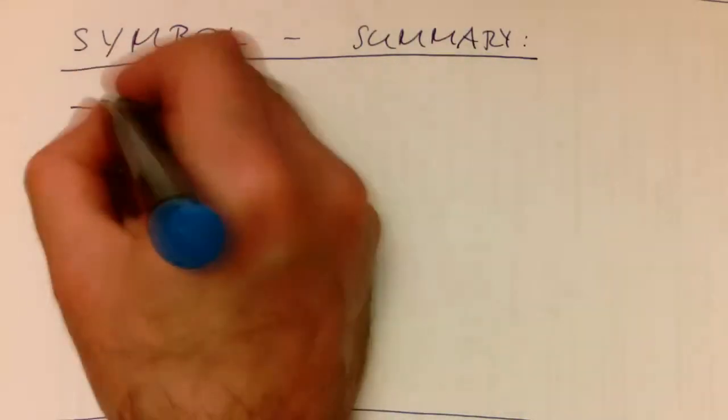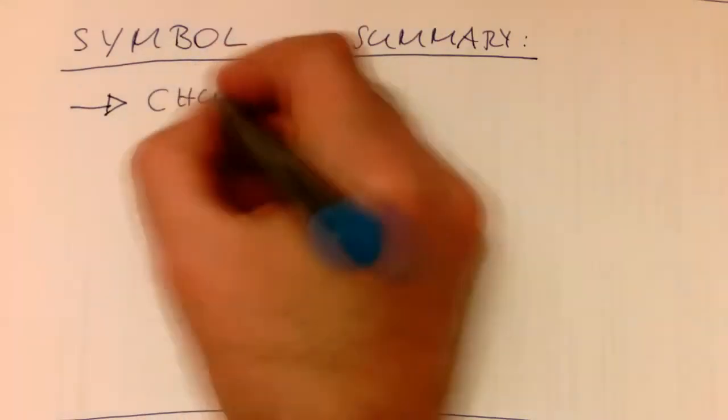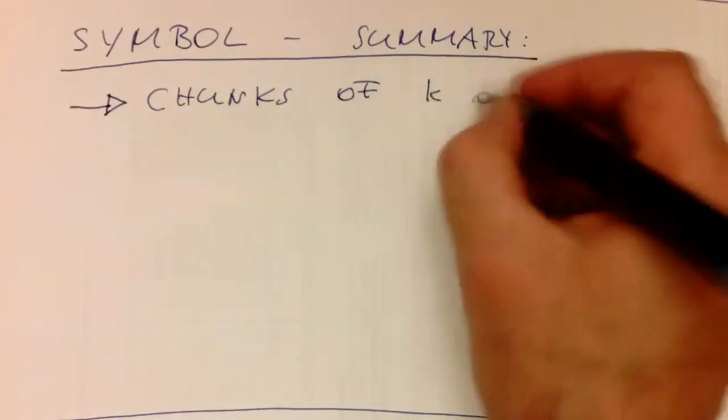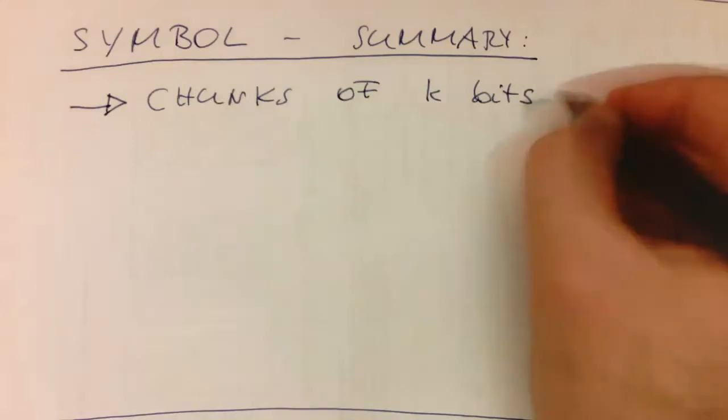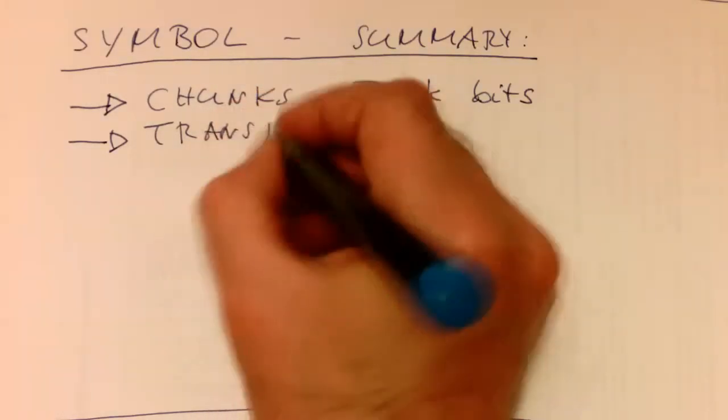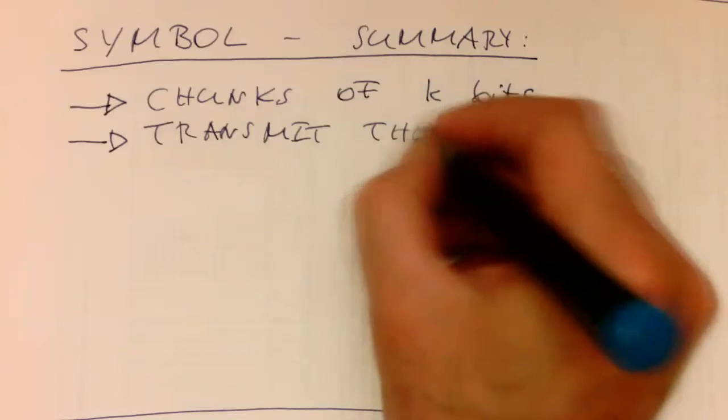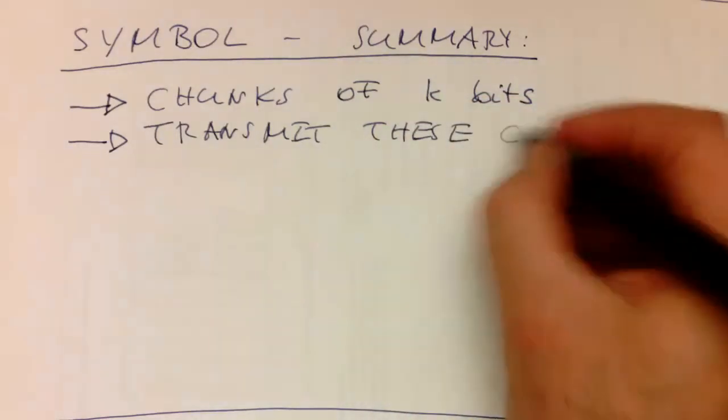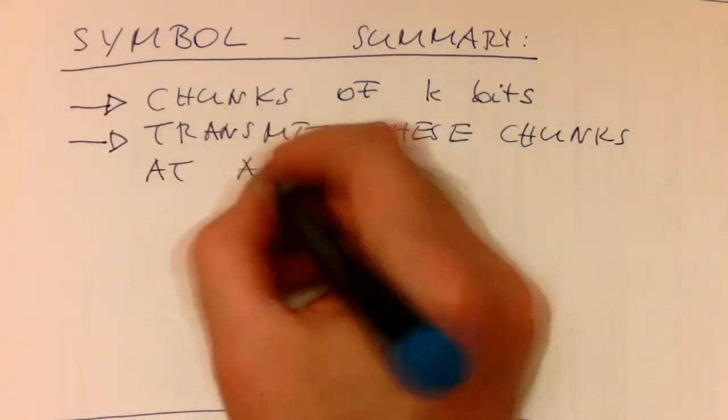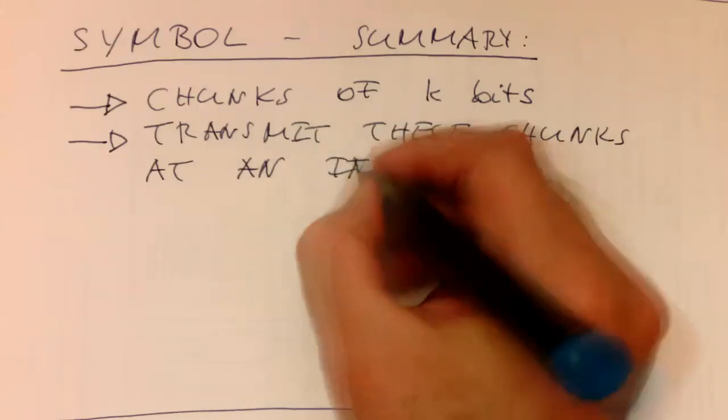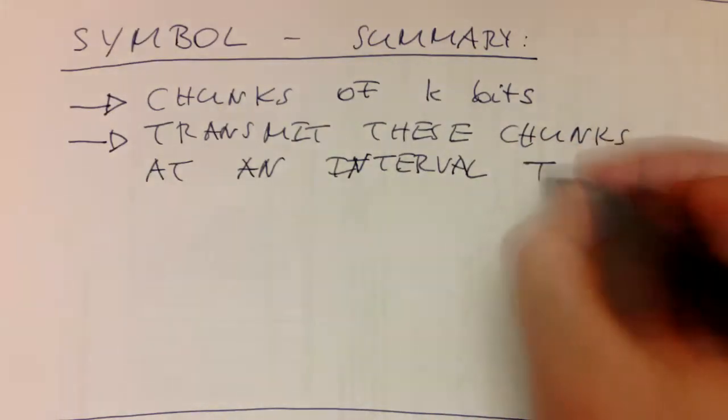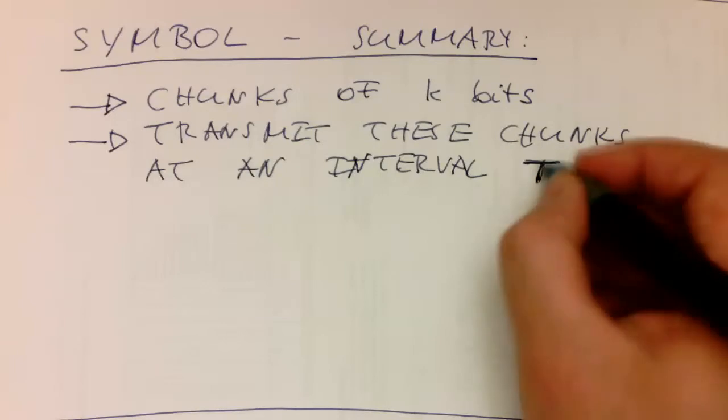The idea of symbol is that we create our chunks of k bits. So we transmit these chunks at an interval, at an interval T. So that's important, at this interval T.